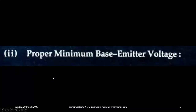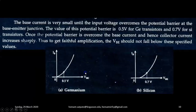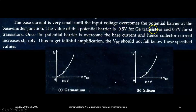Next, let us learn the meaning of proper minimum base to emitter voltage VBE. The base current is very small until the input voltage overcomes the potential barrier at the base-emitter junction. The value of this potential barrier is 0.5 volt for germanium transistors and 0.7 volt for silicon transistors. Once the potential barrier is overcome, the base current and hence collector current increases sharply.